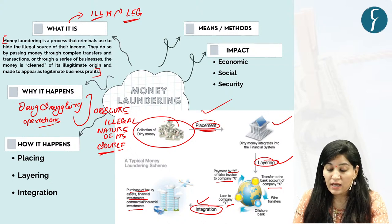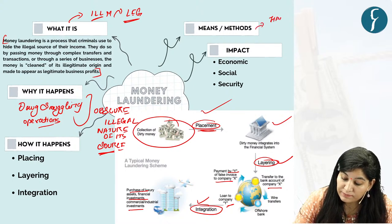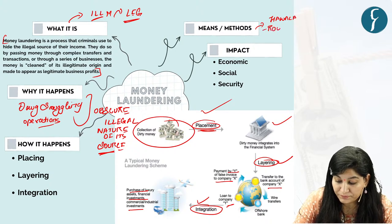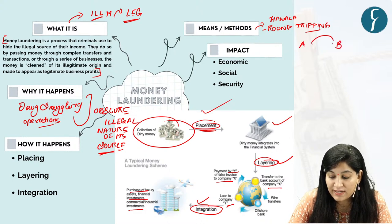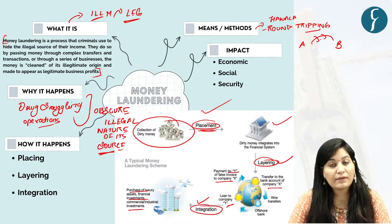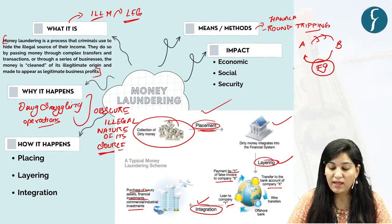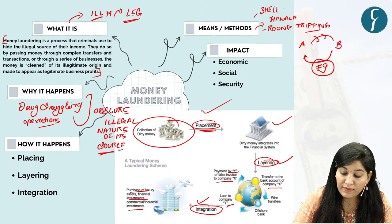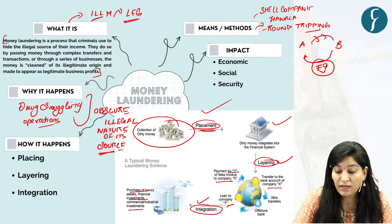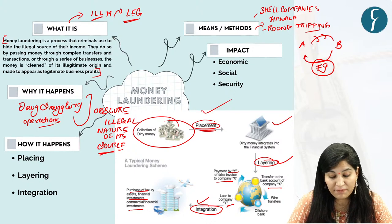Different methods of money laundering include hawala, round tripping — when money leaves a country through various channels and makes its way back as part of foreign investment from another country — creating shell companies, gambling, real estate investment, and creating false invoicing. These are the different methods of money laundering.